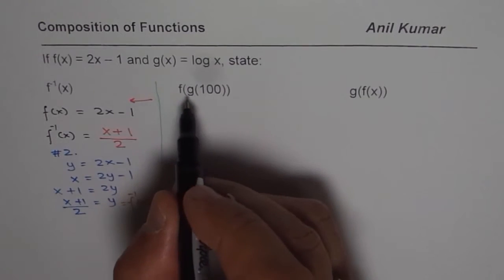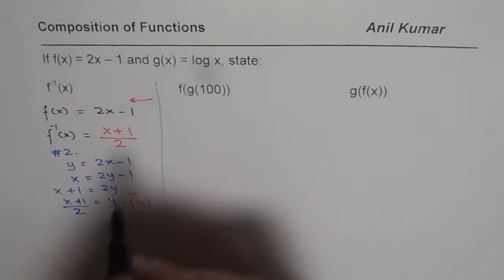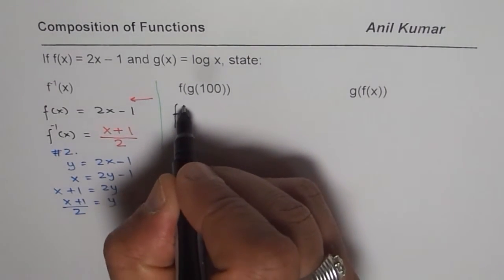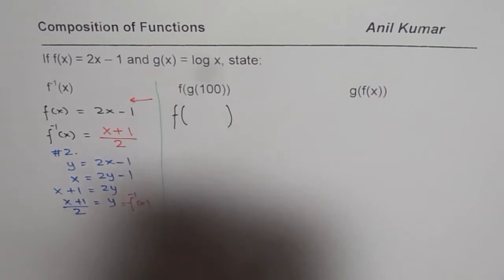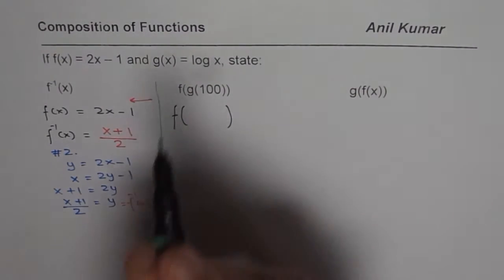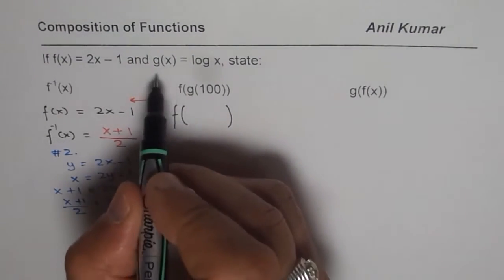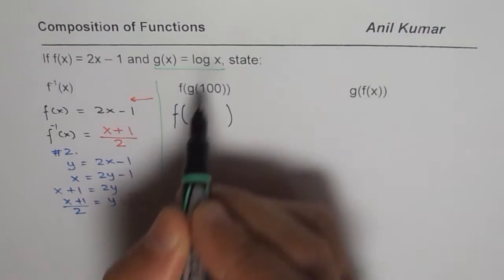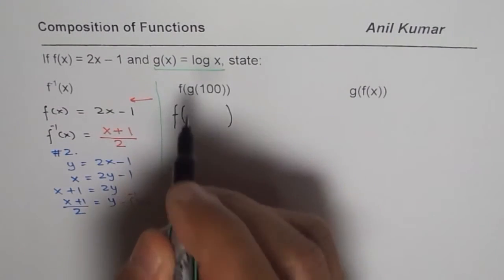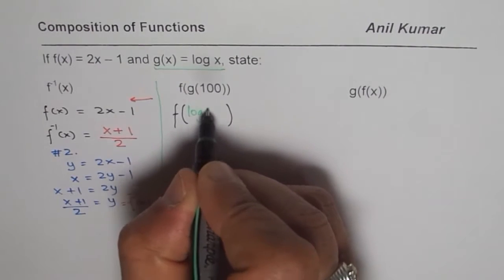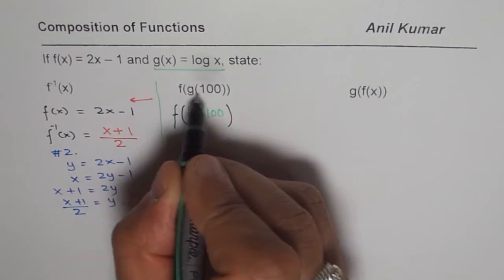Next question is f of g of 100. What does it mean? It means f of... We have to first find what is g of 100. g of 100 means this is your function g. So, you will replace x with 100. So, you say log of 100. That is f of g of 100.